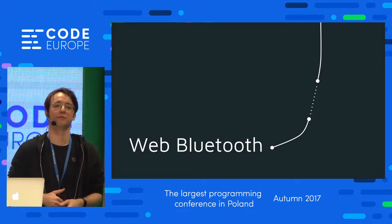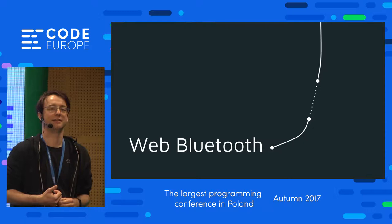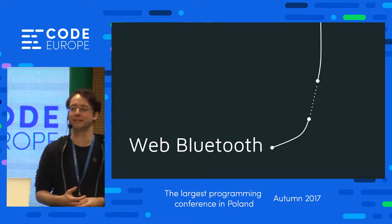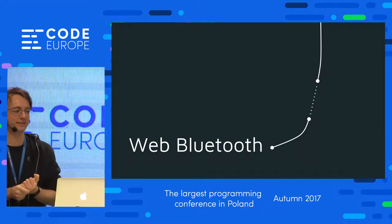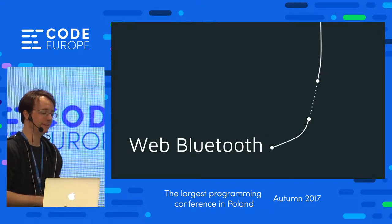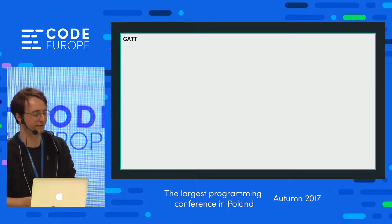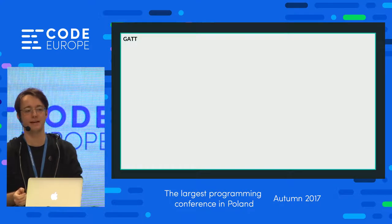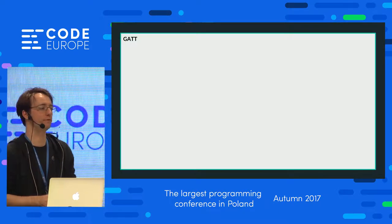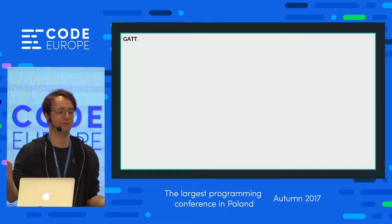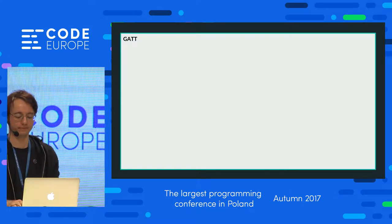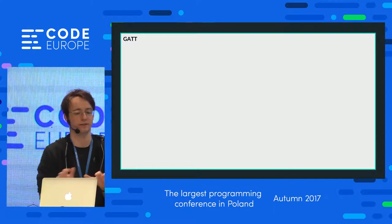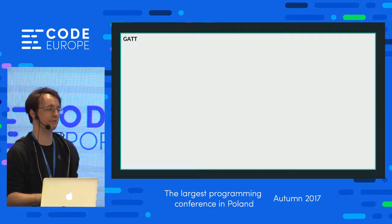Web Bluetooth — who has heard about Web Bluetooth? Who has implemented Web Bluetooth already? Web Bluetooth is an API to talk to Bluetooth devices — more specifically, to talk to Bluetooth LE devices, which are a subset of the Bluetooth specifications in Bluetooth 3.0. To show the API, let me give a quick overview of how a Bluetooth LE device works from a software side.